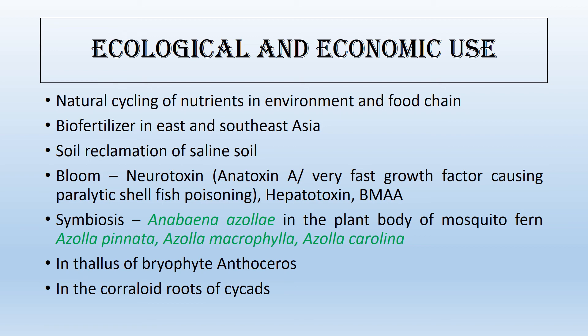Ecologically and economically, Anabaena has a wide range of roles. Being a nitrogen fixer, it is used as a source of biofertilizer. When growing in soil, it improves organic carbon and organic nitrogen content. It grows in symbiosis with mosquito fern — all species of Azolla, such as Azolla pinnata, Azolla macrophylla, and Azolla caroliniana.